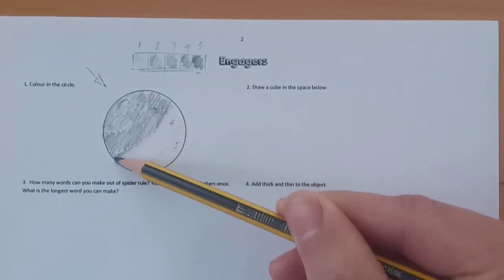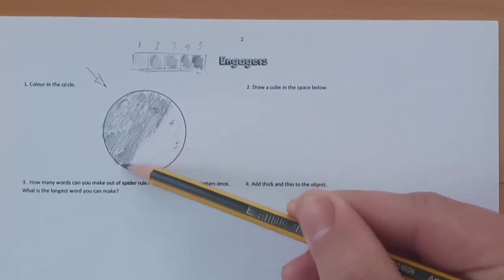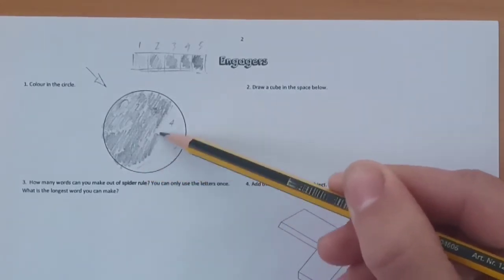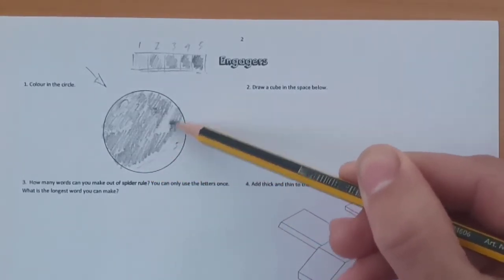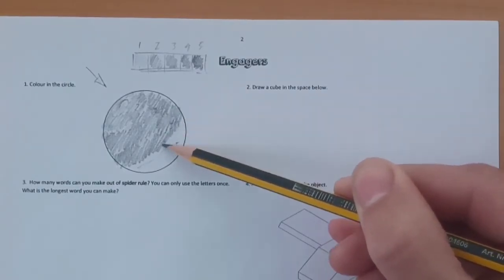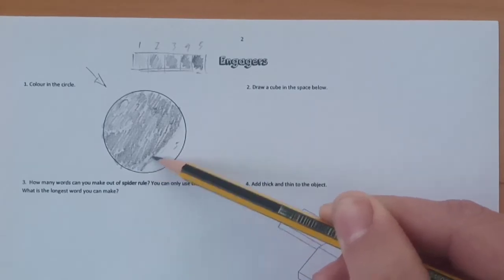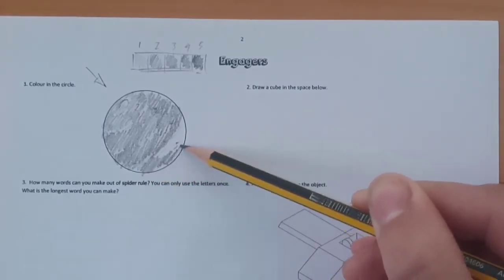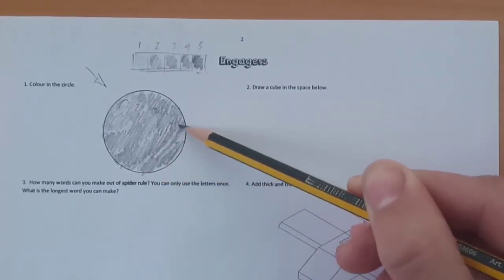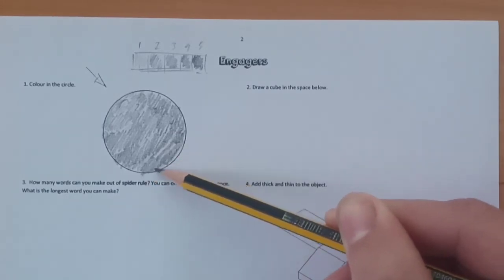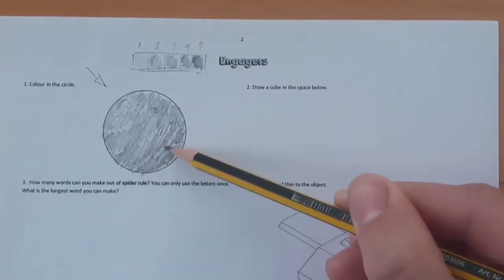And then what we'll eventually do, right at the end, is we'll come back and we'll blend these sections. Now, you can move the paper around to make it easier for yourself. Obviously, from the point of view of this video, that would make it more complicated and harder to watch, for us constantly moving around the image.